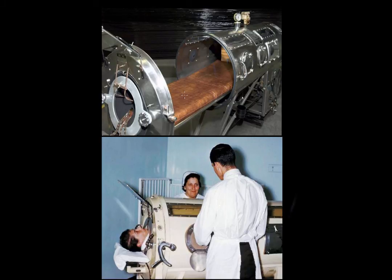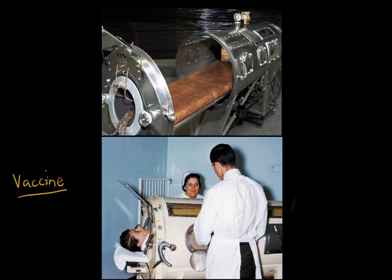Though there is no treatment currently for the poliovirus, there is a way to prevent it — through a polio vaccine. Through vaccination and the efforts of the World Health Organization and many other organizations, eradication of polio is very real. The entire Western Hemisphere, including the United States, North America, and Europe, are completely polio free. While cases still exist in parts of the world, the widespread eradication because of vaccines has been considered one of the world's greatest medical achievements, and hopefully polio can be completely eliminated in the future.